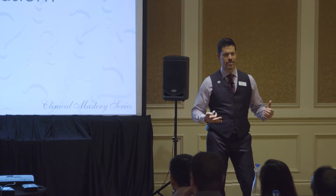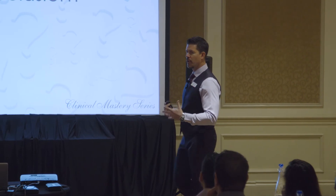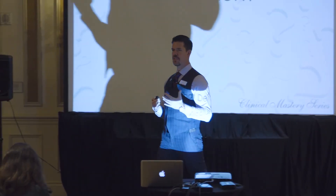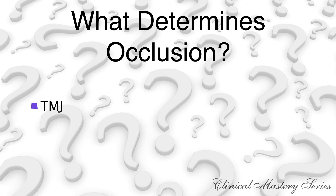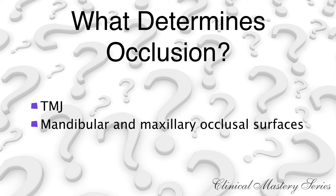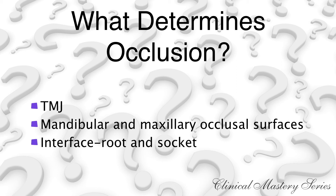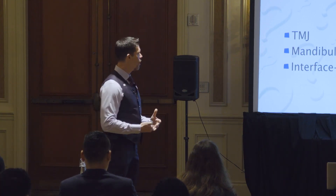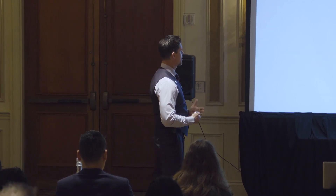When I went through courses, I was told a whole conglomerate of things determine occlusion. But really, it boils down to three things. The first is the temporomandibular joint. The second determinant is how your bottom teeth meet up with your top teeth. And finally, the third determinant is the periodontal apparatus — the interface between the tooth and the bone. Those are your three determinants of occlusion.